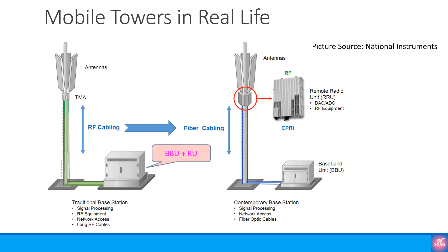We introduced this picture in our Open RAN video a few years ago, and since then it has been used by many people in their presentations and videos. The image on the left shows the traditional base station, commonly used during the 2G and 3G days. The cabinet consisted of all necessary functionality for the baseband processing as well as for the RF processing like filters, power amplifiers, etc. The RF cable would then run from the cabinet to the top of the tower where the antennas were.